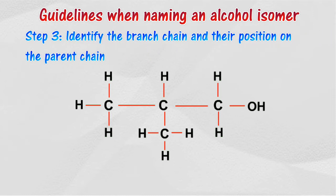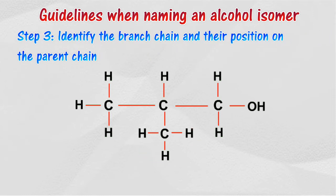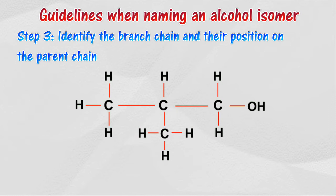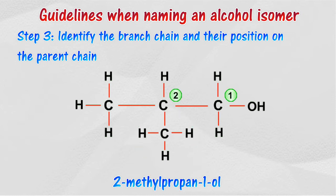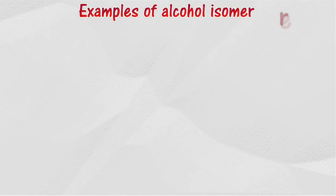Step 3: Identify the branch chain and its position on the parent chain. The type of branch chain is one methyl group, and the position is at the second carbon atom, so the name of this alcohol isomer is 2-methylpropan-1-ol.